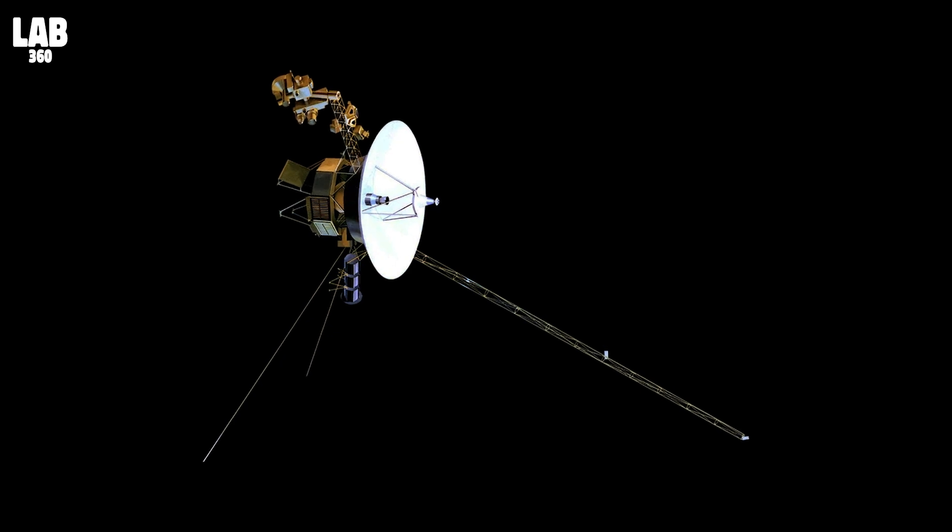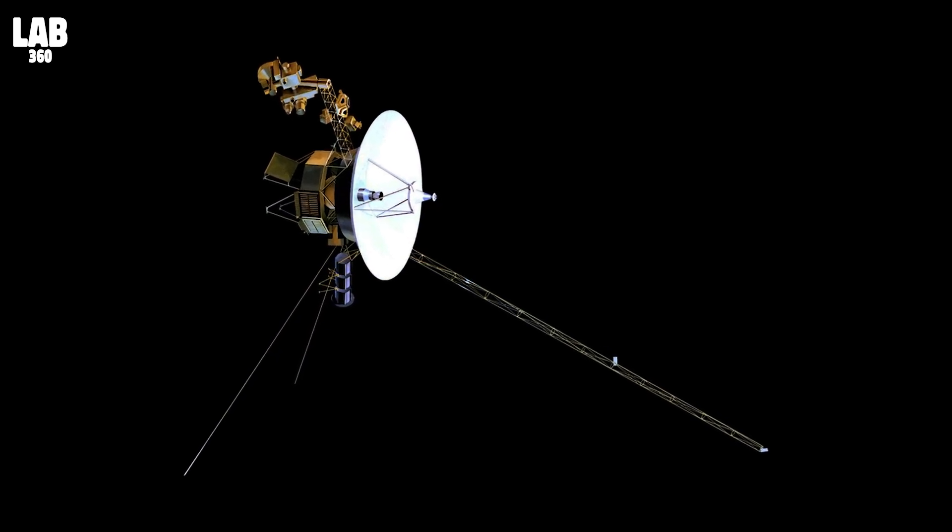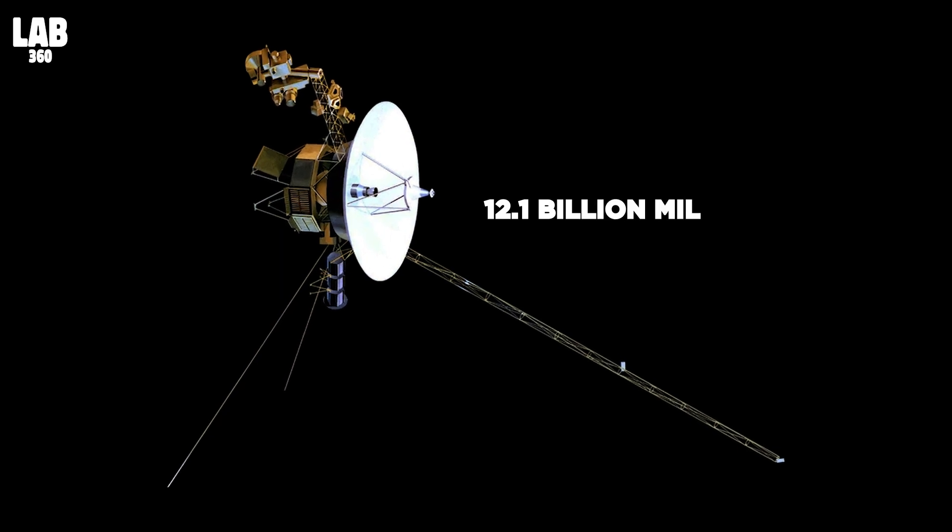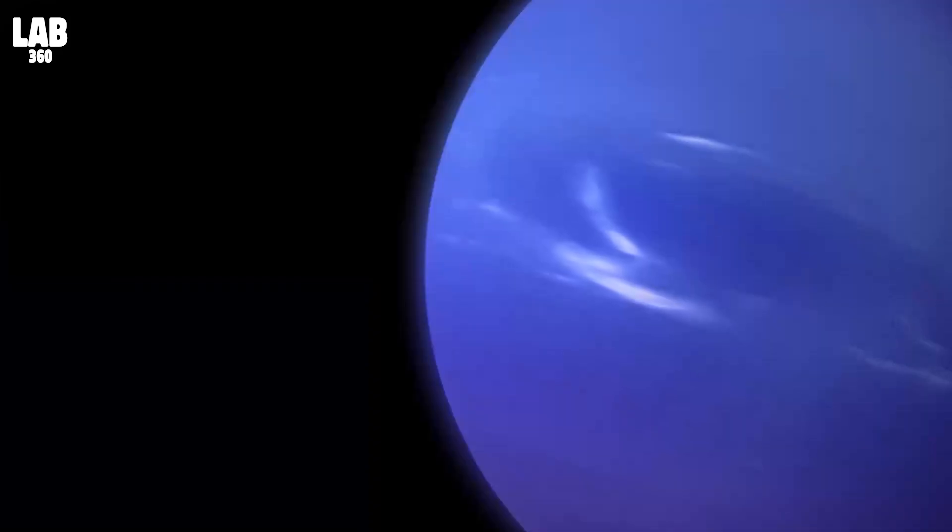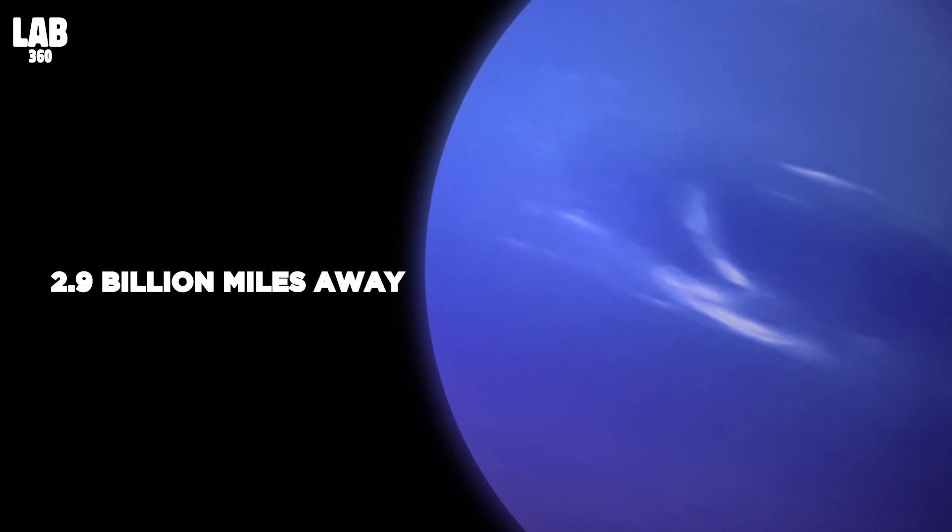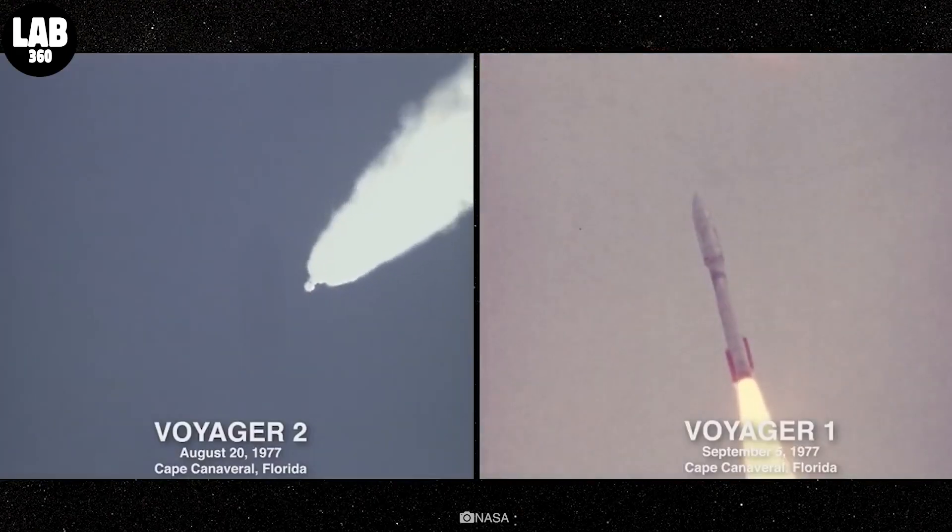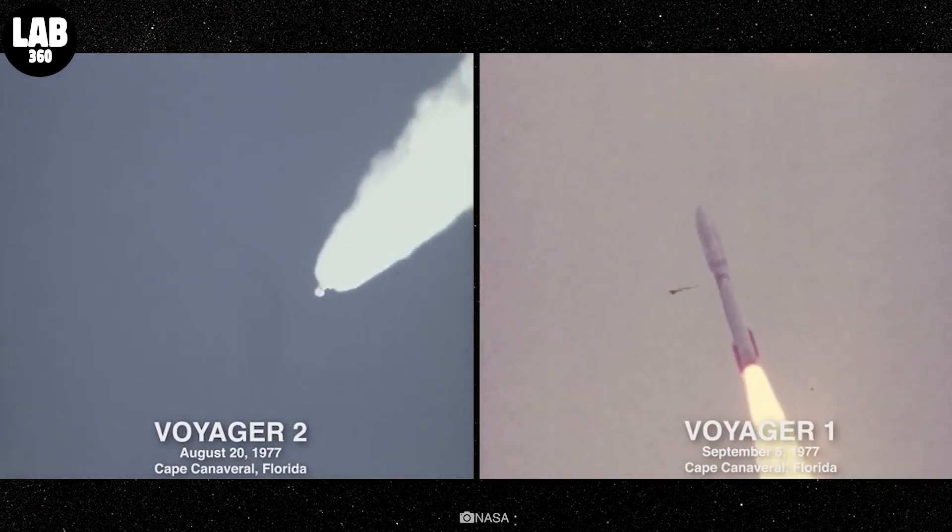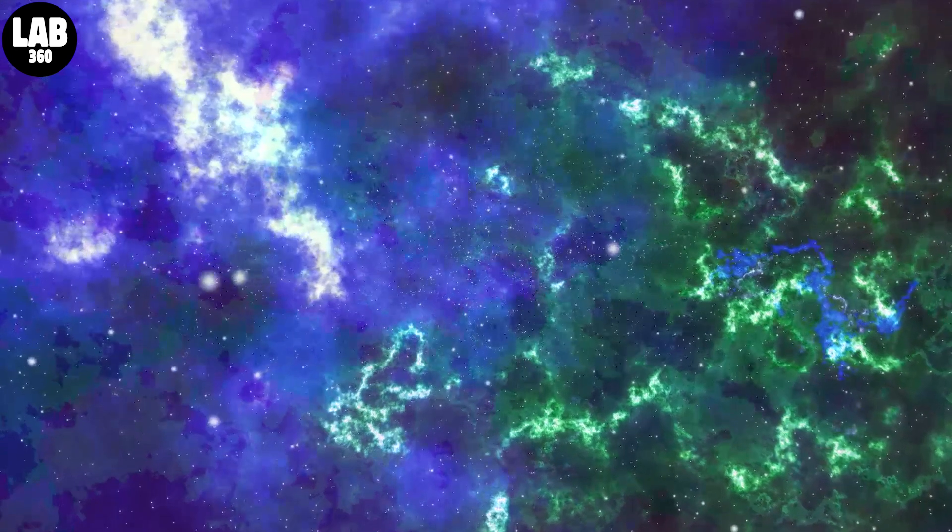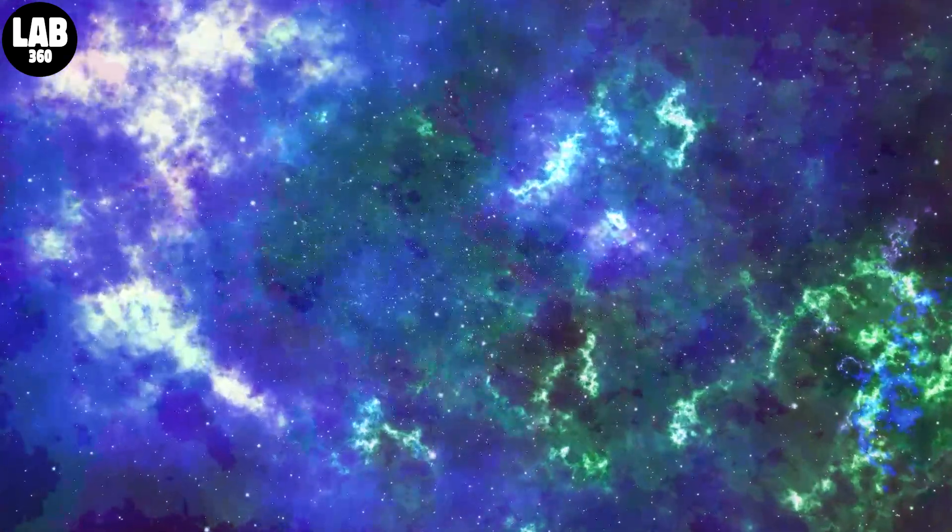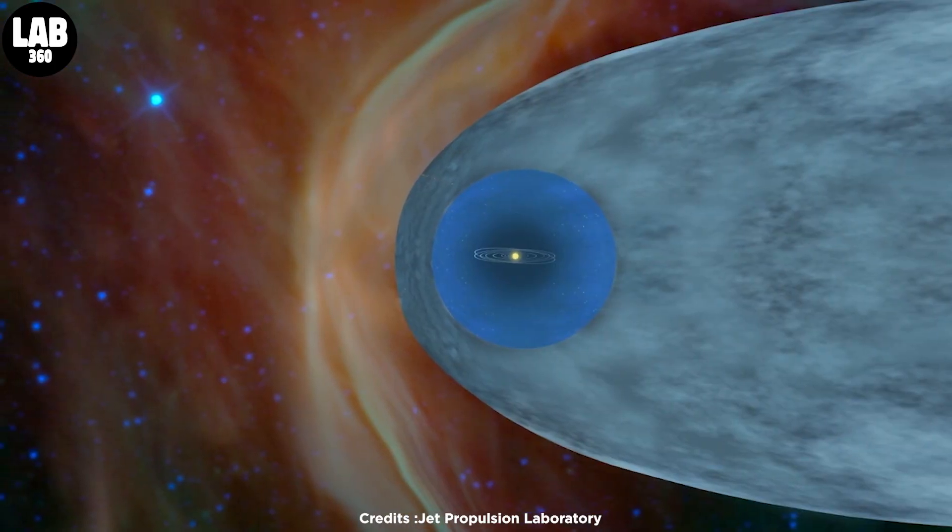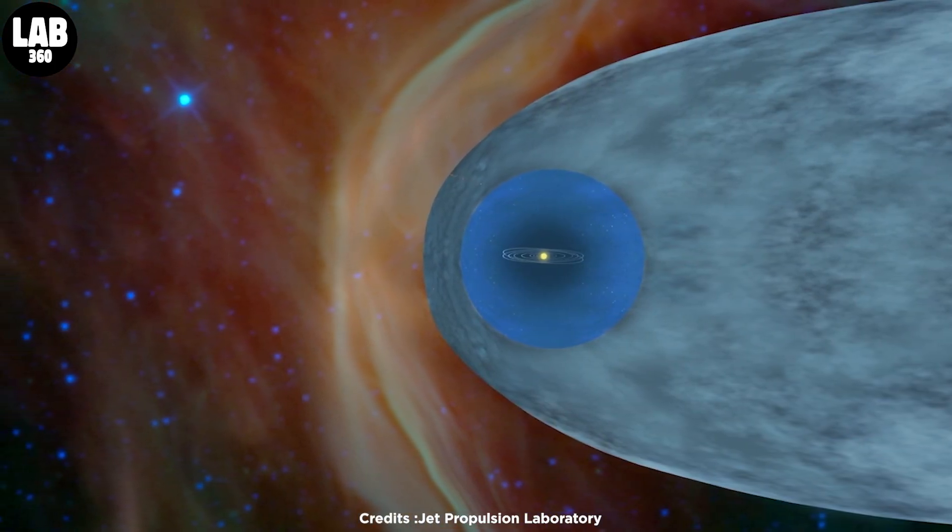Voyager 2, a twin spacecraft, continues to operate well in interstellar space 12.1 billion miles from Earth. By comparison, Neptune, the farthest planet from Earth, is at most only 2.9 billion miles away. Both probes were launched in 1977 and have far exceeded their original purpose to fly by planets. Now, they have become the only two spacecraft to gather data from interstellar space and provide insights about the heliosphere, or the bubble created by the Sun that extends beyond the planets in our solar system.